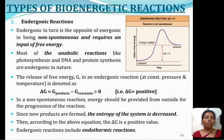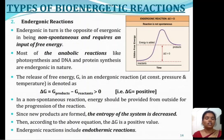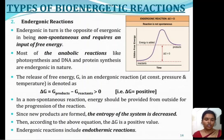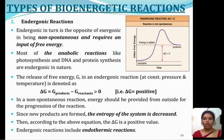Next are endergonic reactions — the opposite of exergonic reactions. Endergonic reactions are non-spontaneous and require an input of free energy. Most anabolic reactions like photosynthesis, DNA synthesis, and protein synthesis are endergonic in nature. This is denoted by the equation: delta G equals G products minus G reactants, which is greater than zero. So delta G is always positive, because energy must be provided from outside for the progression of the reactions. The entropy of the system is decreased in endergonic reactions, which are associated with endothermic reactions.